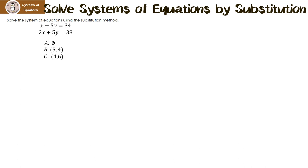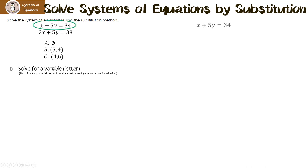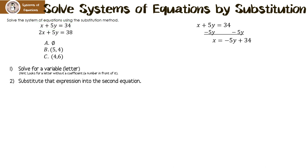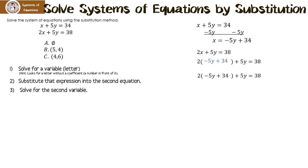Let's look at another example. Solve the system of equations using the substitution method. The hint tells us to look for a letter without a coefficient. Right away I see 1x — this is the best candidate. To get x by itself, I subtract 5y from both sides, giving x equals negative 5y plus 34. Next, I back-substitute that expression into the second equation, leaving a big space for x and substituting in. Now I distribute: 2 times negative 5y is negative 10y, and 2 times 34 is 68.